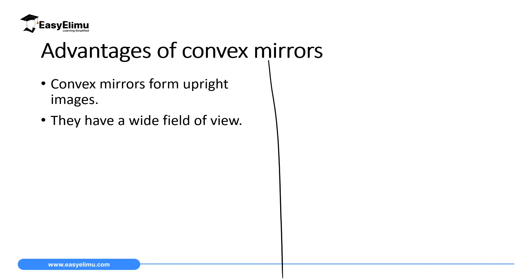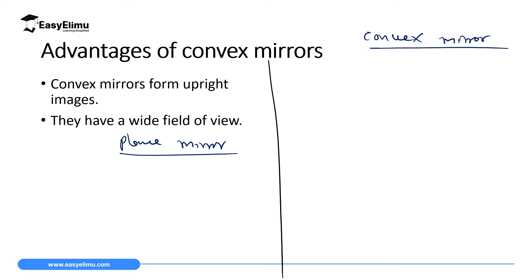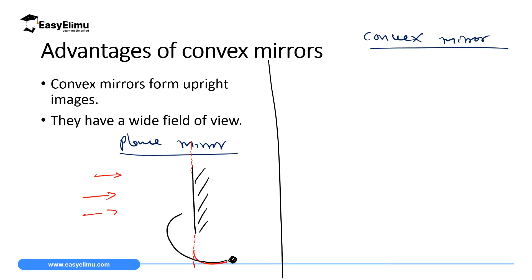We can compare this with a plane mirror. For a plane mirror, it can only be used to observe objects which are directly in front of it, covering an angle of about 180 degrees. If an object is at an angle beyond that, light cannot travel around corners to be seen in the mirror. So a plane mirror has a very small field of view.